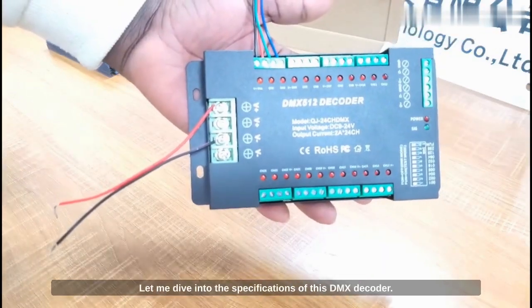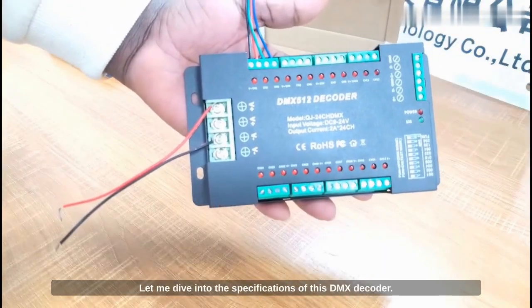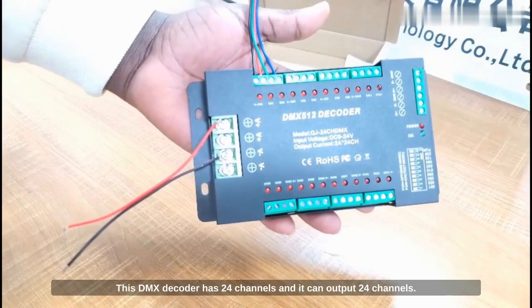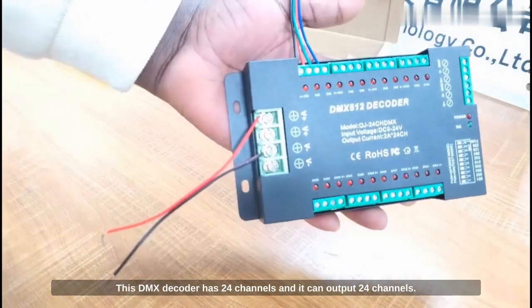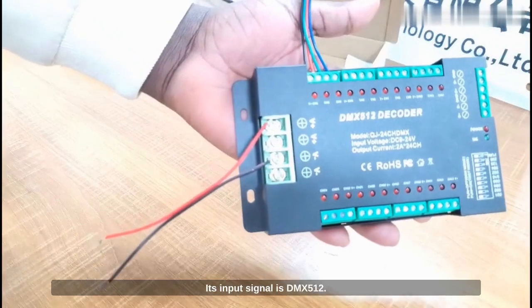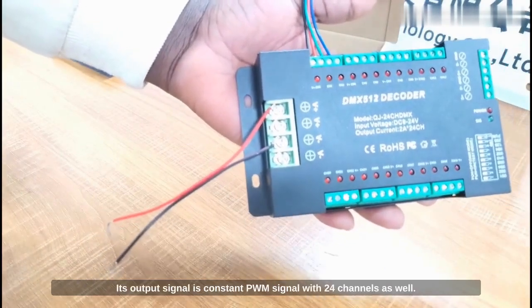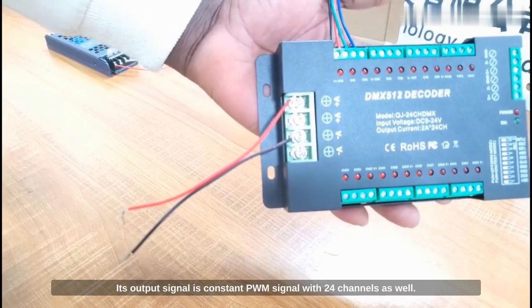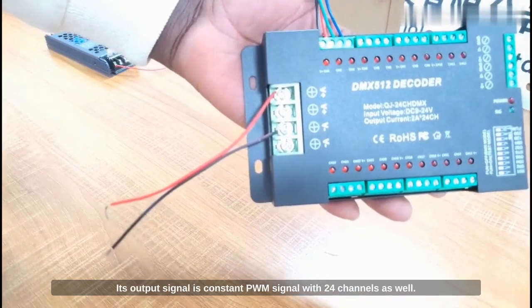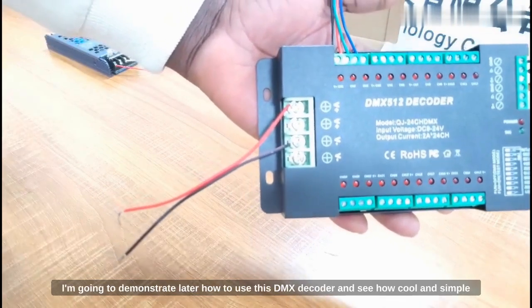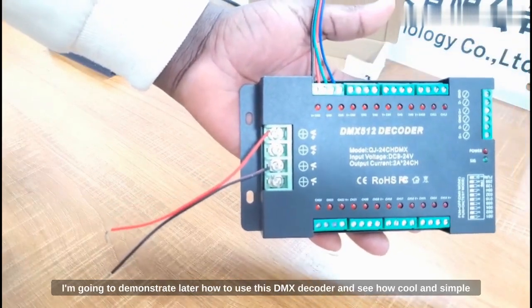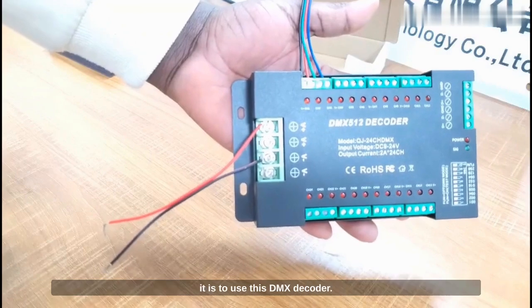Let me dive into the specifications of this DMX decoder. This DMX decoder has 24 channels and it can output 24 channels. Its input signal is DMX 512, its output signal is constant PWM signal with 24 channels as well. So I'm going to demonstrate later how to use this DMX decoder and see how cool and simple it is.